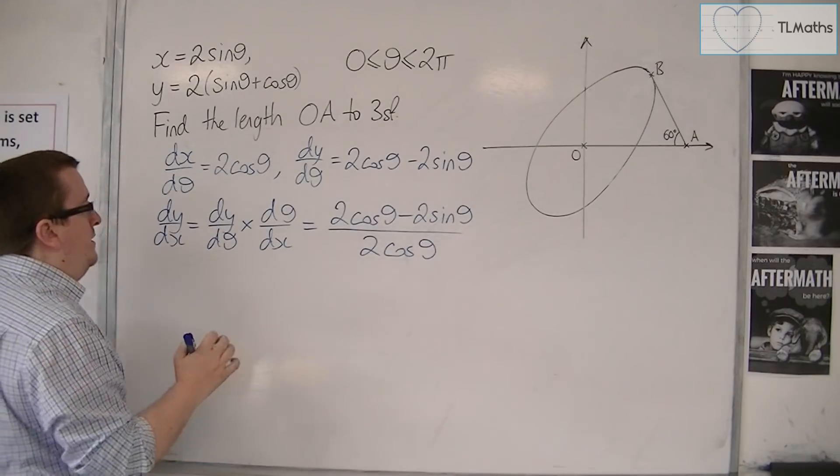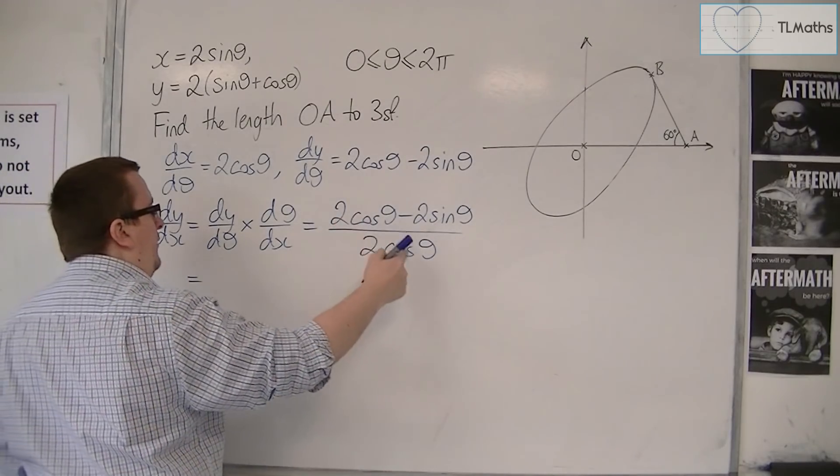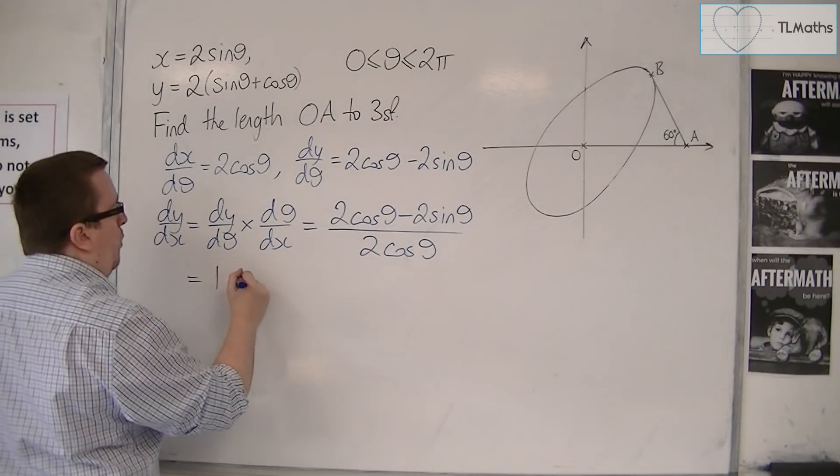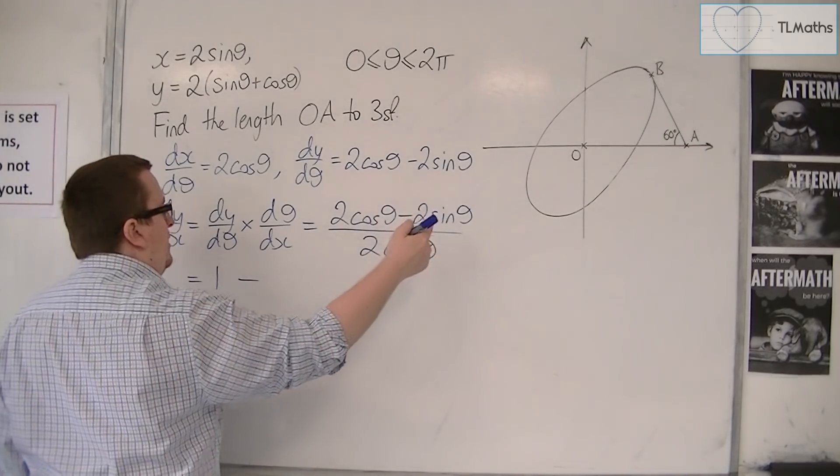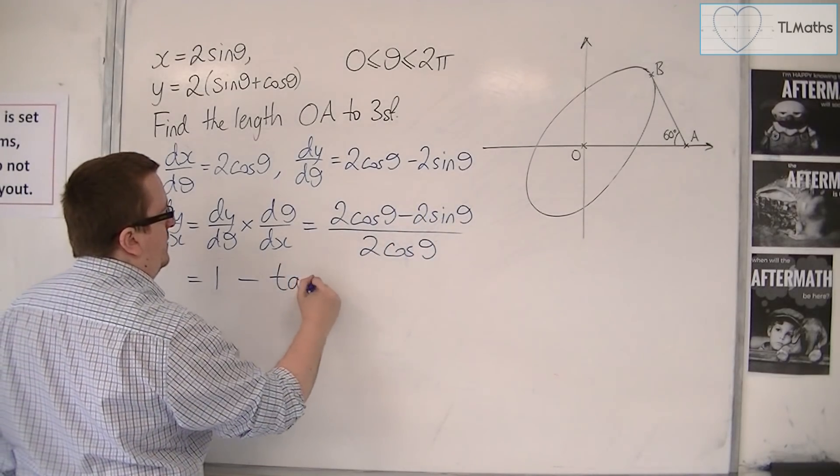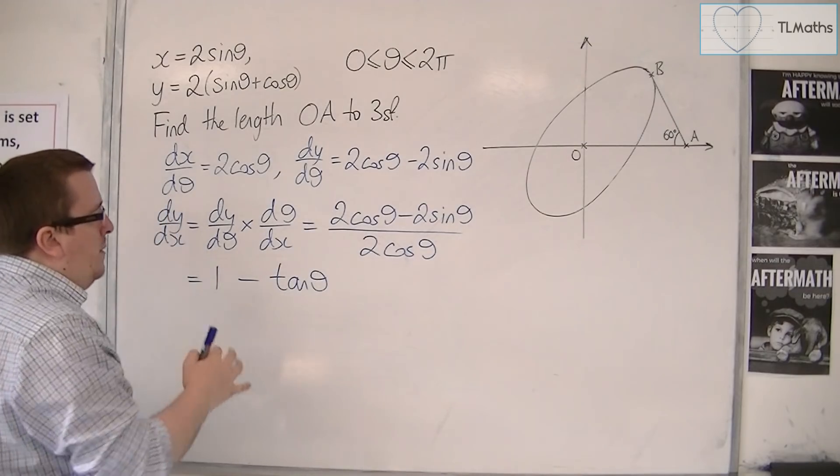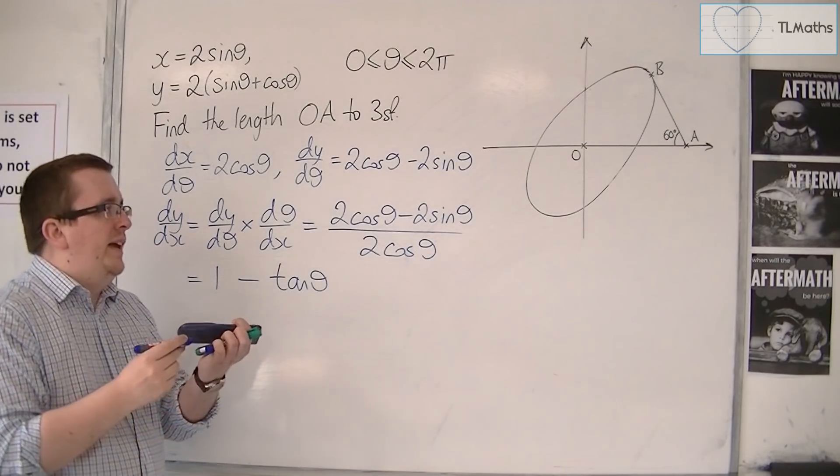That can be simplified. We have 2 cos theta divided by 2 cos theta, which is 1, and 2 sine theta divided by 2 cos theta is just tan theta. So dy by dx is 1 minus tan theta.